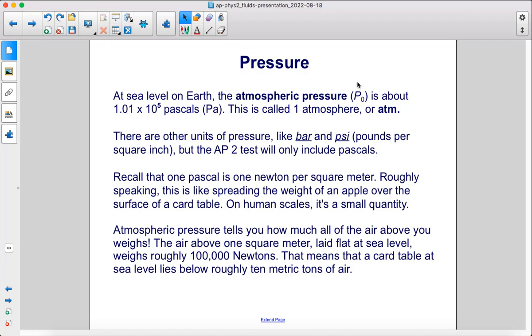Recall that 1 pascal is 1 newton per square meter. Roughly speaking, this is like spreading the weight of an apple over the surface of a card table. On human scales, it's a small quantity. Atmospheric pressure tells you how much all of the air above you weighs. The air above one square meter, laid flat at sea level, weighs roughly 100,000 newtons. That means that a card table at sea level lies below roughly 10 metric tons of air.